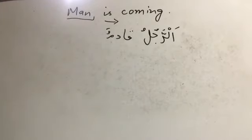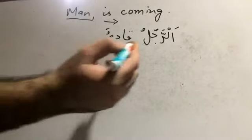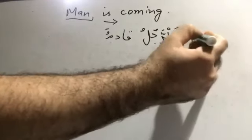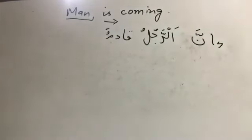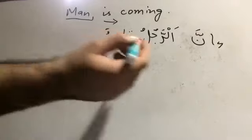In what conditions will a noun go into the genitive case? So far we have learned that if there is a haruf ul-jar, the noun will go into the genitive case. In what case will it be accusative? If the nominal sentence starts with inna — inna means 'indeed' or 'certainly', it gives emphasis — what inna does is it puts the subject into the accusative case. Inna rajulun — it puts the subject of a nominal sentence into the accusative case.